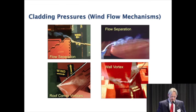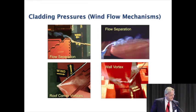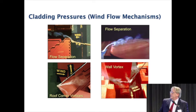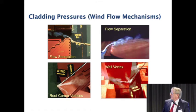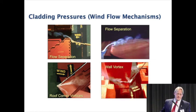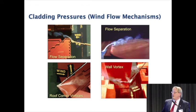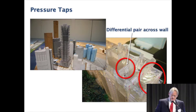Three main topics in wind engineering for tall buildings are cladding pressures, structural loads, and pedestrian comfort. Mechanisms causing cladding issues include flow separation generating strong negative pressures, corner vortices on roofs creating high suctions, and the junction between a podium and tower face where a small vortex — like a baby tornado — can produce pressures substantially higher than on the roof. Sometimes results are counter-intuitive.